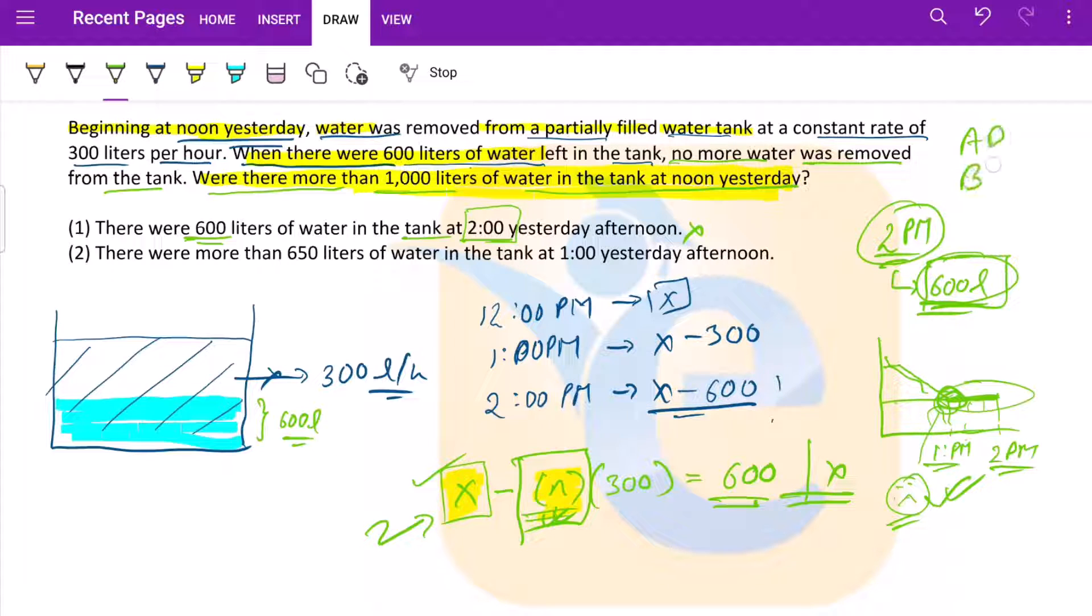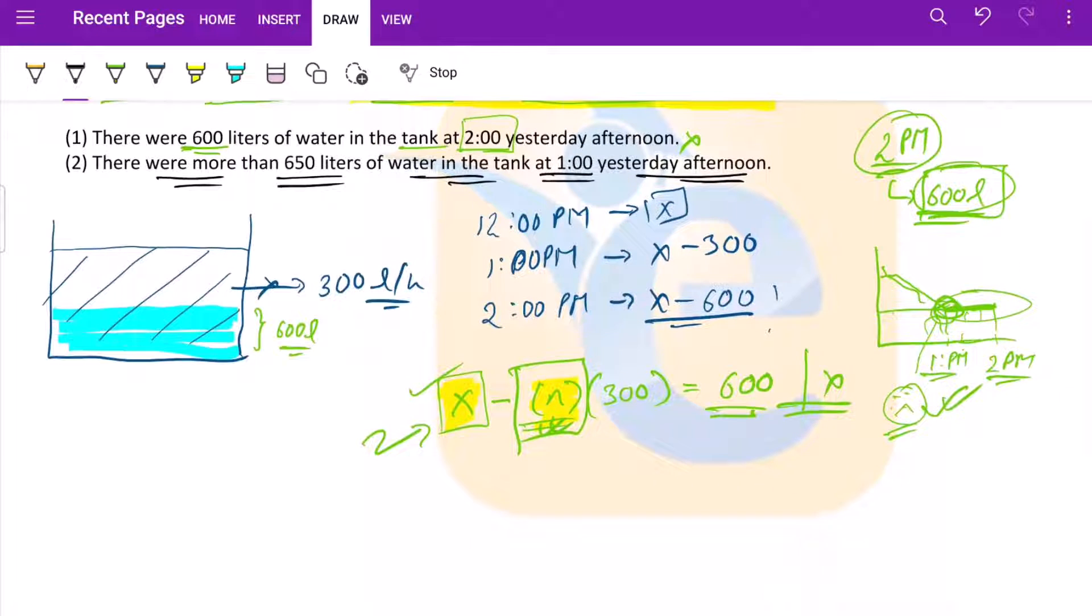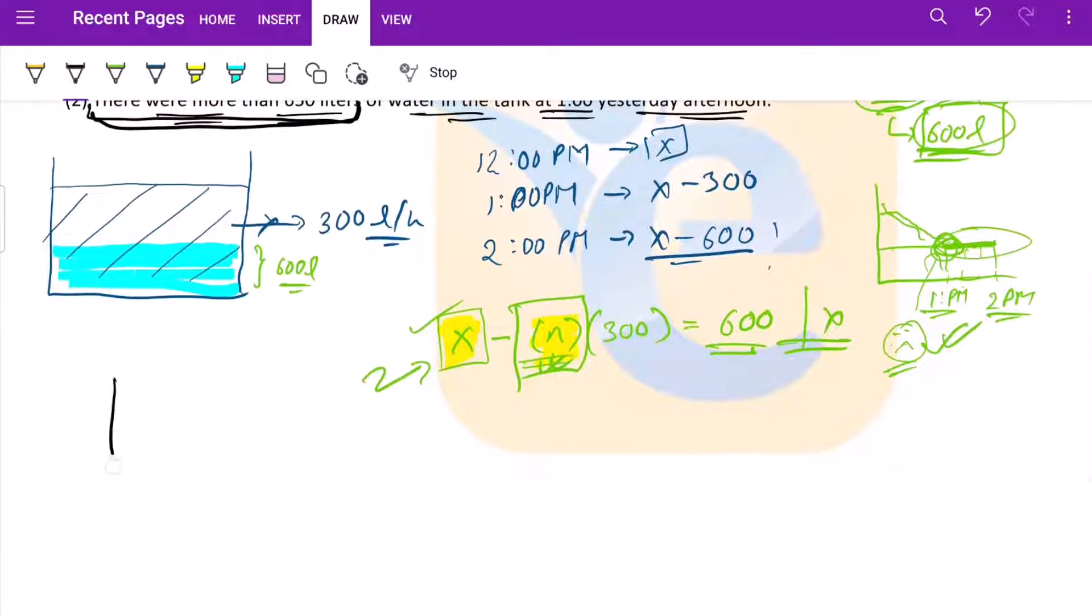Moving on, there were more than 650 liters of water in the tank at 1 yesterday afternoon. Let us analyze the statement. We do not know how much more, it was just more than 650.